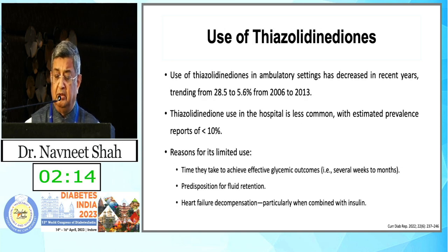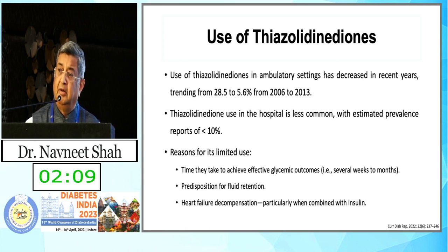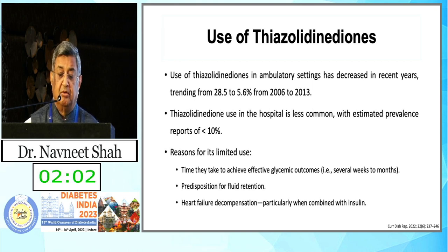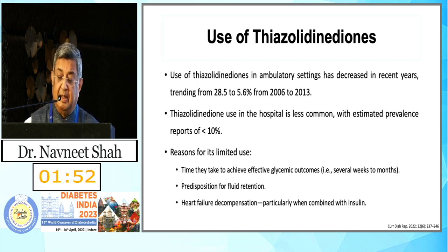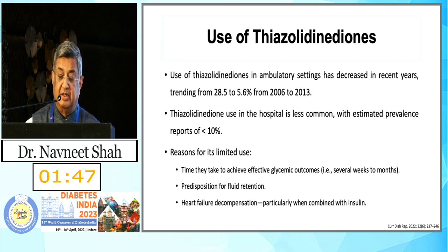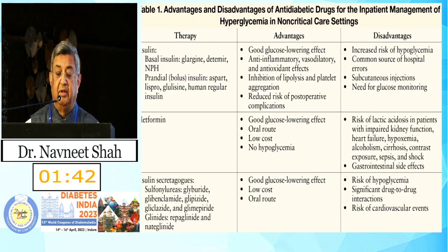Use of thiazolidinediones is also associated with volume retention. There are issues related to unpredictability of sugar control, and prevalence of thiazolidinedione use in hospital is less than 10%. They take several weeks to months to achieve glycemic outcomes, and are associated with predisposition to fluid retention, heart failure decompensation, anemia, and fracture risk — all of which argue against their use in hospitalized patients.